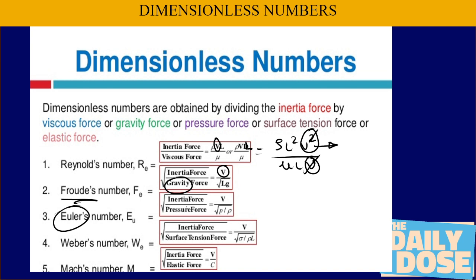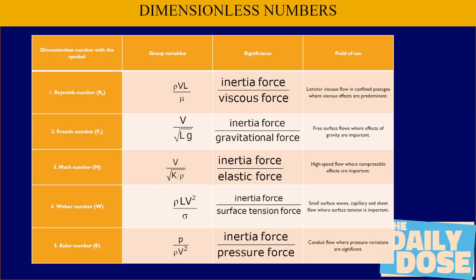To recap: Euler used to take the pressure of every department, so inertia force by pressure force under root gives the Euler number. Weber was always in tension, so inertia force by surface tension force under square root gives the Weber number. And Mach — Macho — a well-known undergarments brand, where elasticity is important: inertia force by elastic force gives the Mach number.